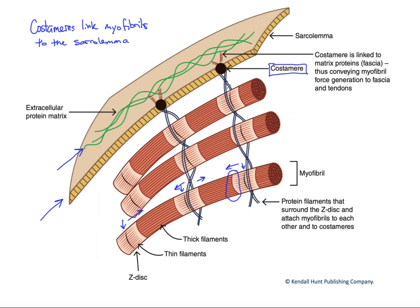So what the costamere is going to do is actually help convey this shortening - and I'll draw it here as well - the shortening that we experience here, across the membrane to the outside of the cell, to the extracellular structures. The costamere spans the membrane and then, via some other proteins, will link to this extracellular matrix.